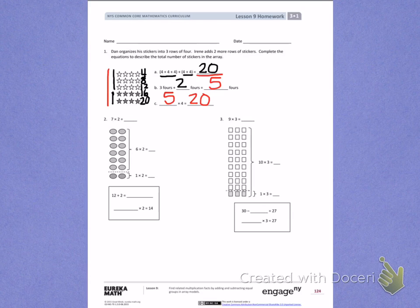Number 2. We're trying to find the total for 7 times 2. We're going to start with 6 times 2. So I'm going to skip count by 2s and label: 2, 4, 6, 8, 10, 12. 6 times 2 is 12.